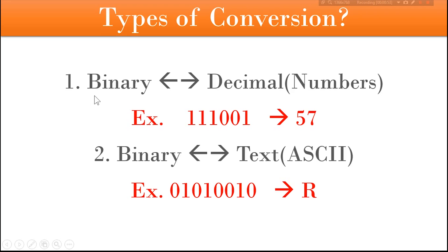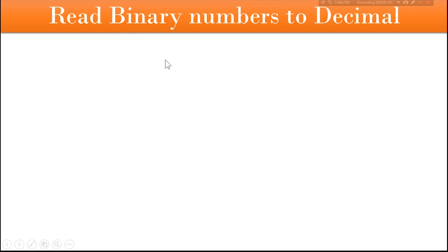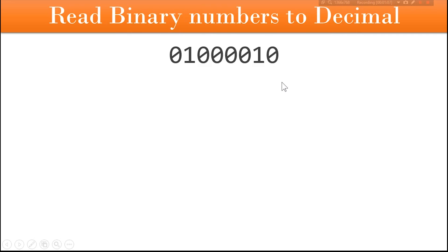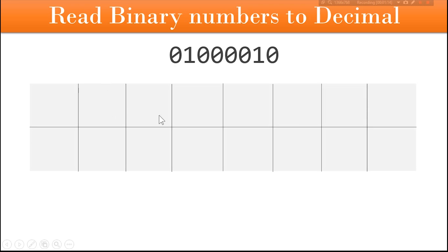Let's get started with the first type of conversion: binary to decimal and decimal to binary. First we will learn how to read binary numbers — that is, convert any binary number to decimal. Suppose we have the binary number 01000010. We would convert this into decimal. First, make a table of two rows and eight columns — eight columns because this binary number has eight digits.